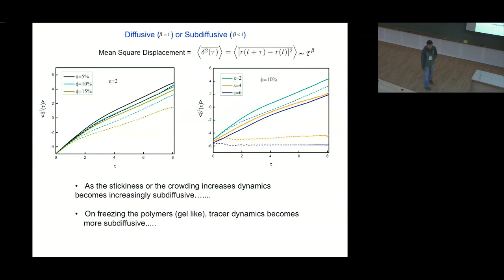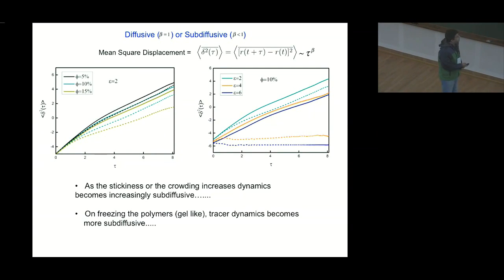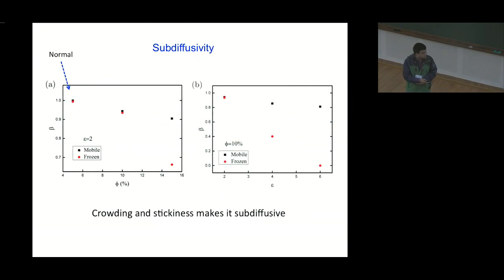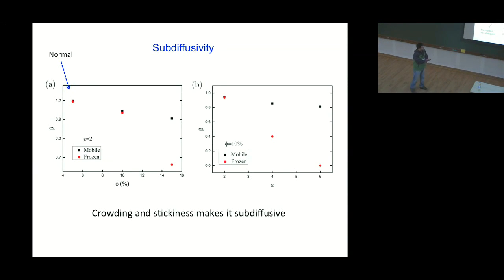Similarly, if I fix the volume fraction and increase the stickiness parameter, the dynamics becomes slower and sub-diffusive. I also have two sets of curves — solid lines and dotted lines. The dotted lines represent simulations where the polymers are frozen during the simulation. Keeping all parameters constant, freezing the polymer dynamics slows things down and makes the motion more sub-diffusive. The exponent beta — a measure of sub-diffusion — is close to one for normal diffusion, drops with increasing volume fraction, and is quite small when the background network is frozen.